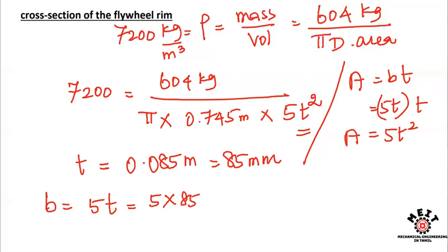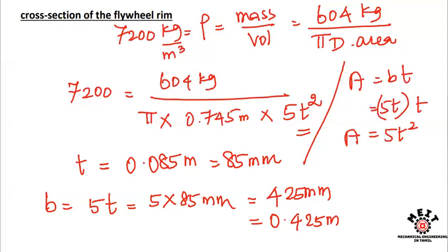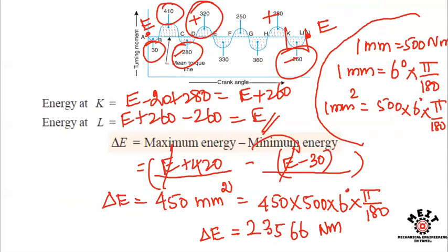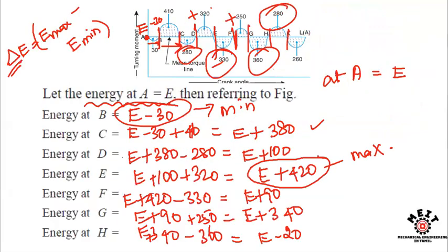Therefore, the width b equals 5 times t equals 5 times 85 mm, which equals 425 mm or 0.425 meters. This is how we determine the width, thickness, and diameter from the given turning moment diagram. Thank you.